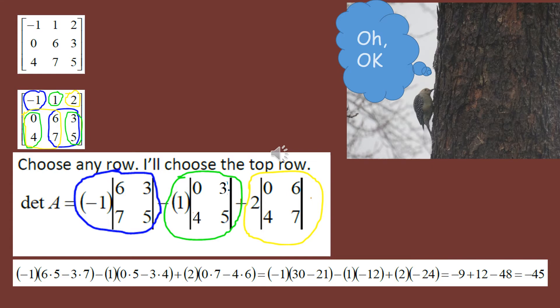Moving to the second position in the first row, I have 1. It's in a negative position — remember the checkerboard grid: positive, negative, positive. So 1 gets paired with the 2x2 containing 0, 3, 4, 5. I find the determinant of that 2x2: zero times five minus three times four. It gets multiplied by 1, but also considered negative because of its negative position.